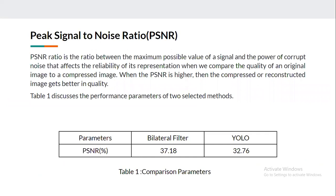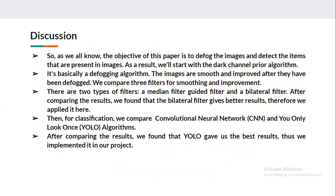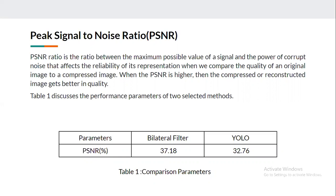PSNR (Peak Signal-to-Noise Ratio) is the ratio between the maximum possible value of a signal and the power of corrupt noise that affects the reliability of its representation. When comparing the quality of an original image to a compressed image, a higher PSNR indicates better quality reconstruction. In Table 1, we discuss the performance parameters of the two selected methods — bilateral filter and YOLO. The bilateral filter achieved a PSNR value of 37.18, and YOLO achieved 32.76.